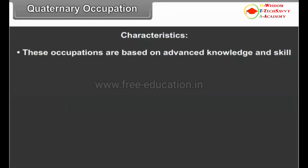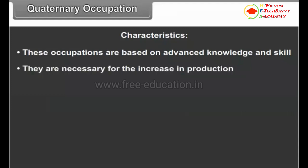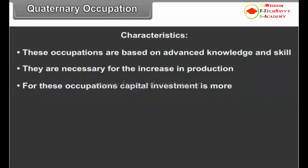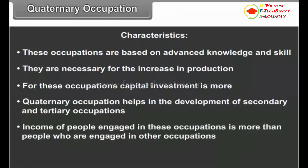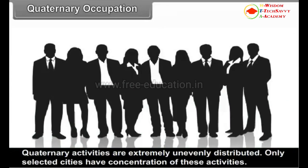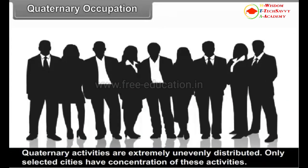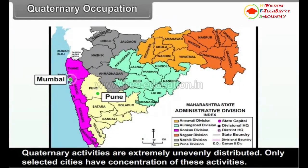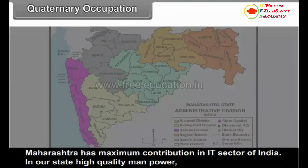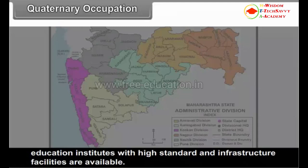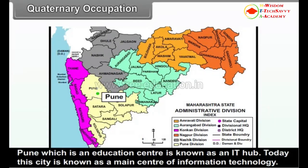Characteristics: These occupations are based on advanced knowledge and skill. They are necessary for the increase in production. For these occupations, capital investment is more. Quaternary occupation helps in the development of secondary and tertiary occupations. Income of people engaged in these occupations is more than the people engaged in other occupations. Quaternary activities are extremely unevenly distributed; only selected cities have concentration of these activities. Maharashtra has maximum contribution in IT sector of India. In our state, high quality manpower, education institutes with high standard and infrastructure facilities are available. Pune, which is an education center, is known as an IT hub.